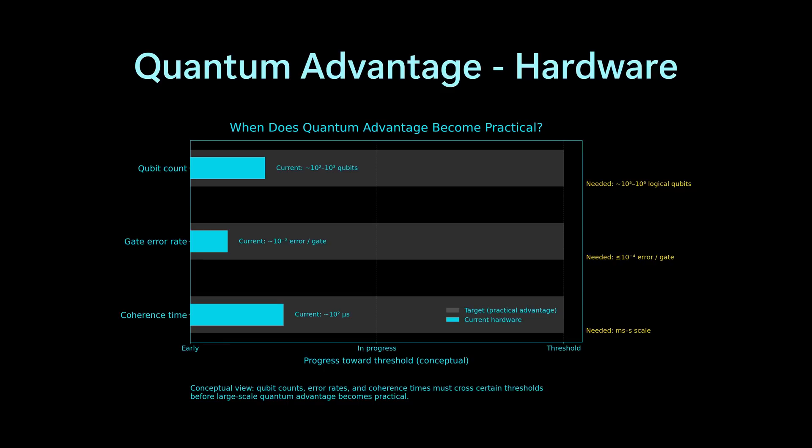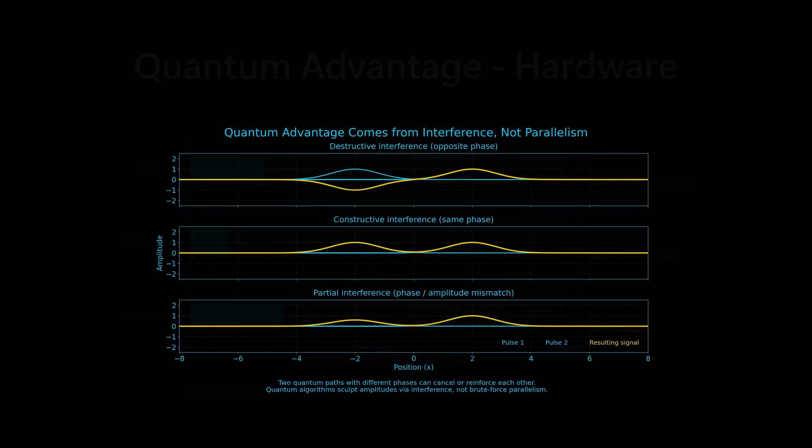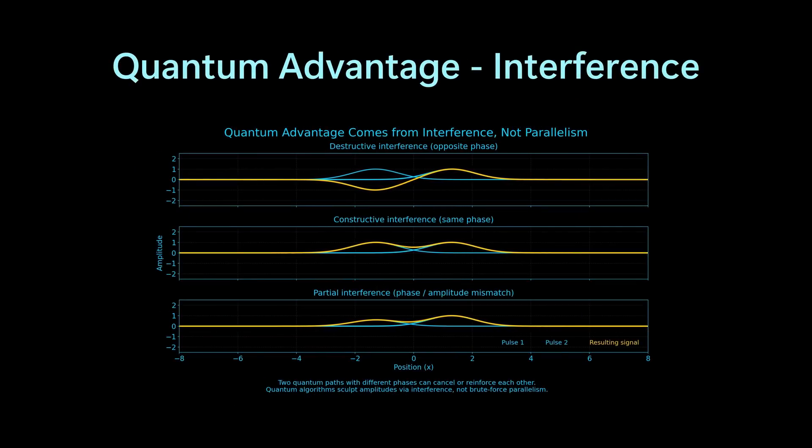Just to drive home the point again, please look at the graphic below. It shows exactly what constructive and destructive interference is. This is important because, as we discussed, interference is one of the two elements we control in quantum computing algorithm design. Below, you can see completely constructive, completely destructive, and partial phase interference. We will be working a lot with this.